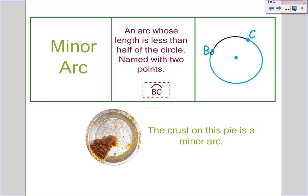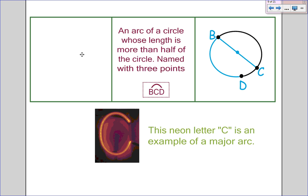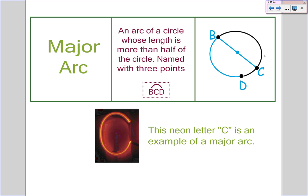A minor arc is an arc whose length is less than half of the circle. We name it with only two points, so arc B to C would be a minor arc — like a piece of pizza, less than half. A major arc is an arc whose length is more than half, and we use three points to name it — so arc B to C to D would be a major arc. To review: a semicircle is half, a minor arc is less than half, and a major arc is more than half. We need three points for a major arc because BD alone doesn't tell us which way we're going.